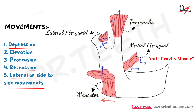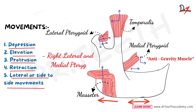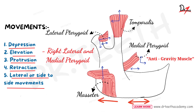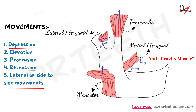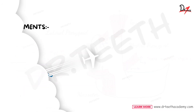In lateral or side-to-side movement, imagine you are chewing from your left side. That movement will take place with the help of the right lateral pterygoid and right medial pterygoid, which push the chin to the left side. Then the left muscles activate — the left temporalis anterior fibers, left masseter deep fibers — to chew the food.